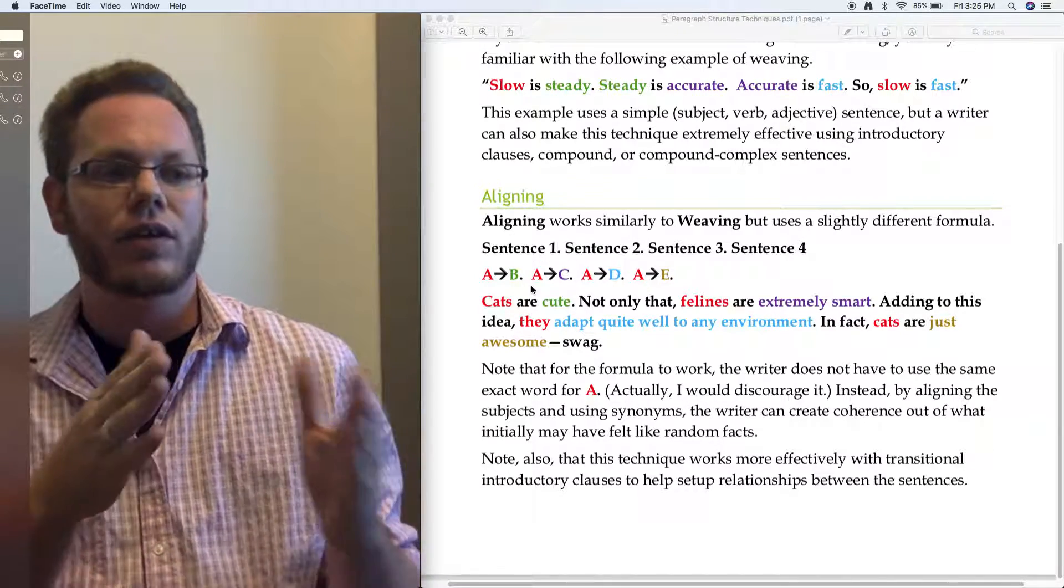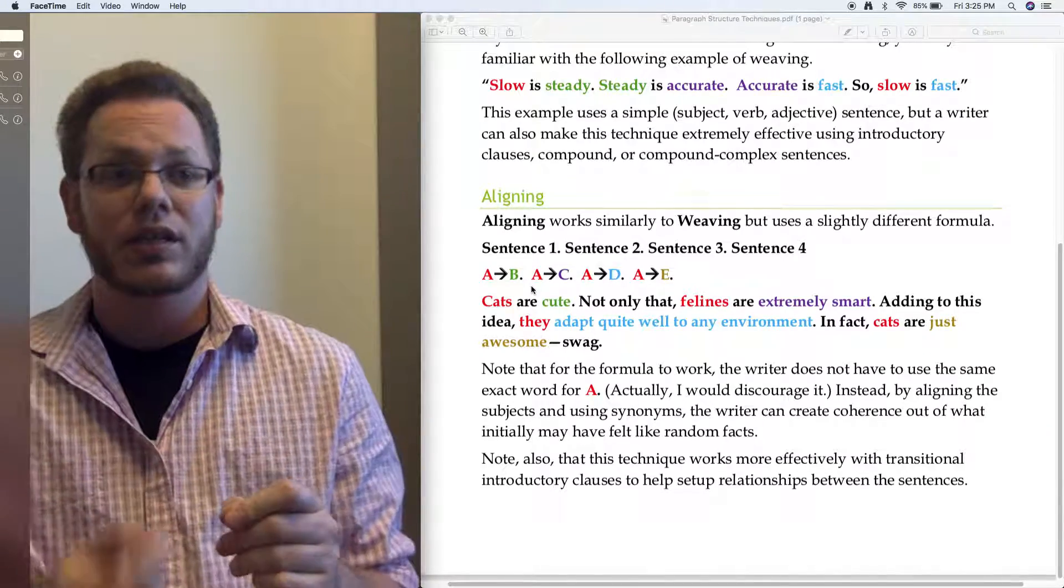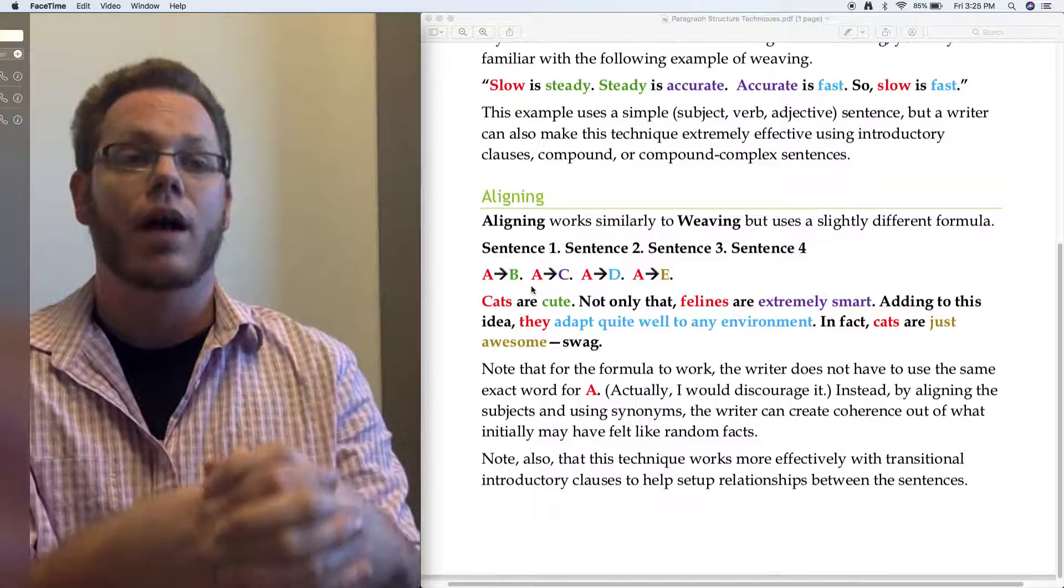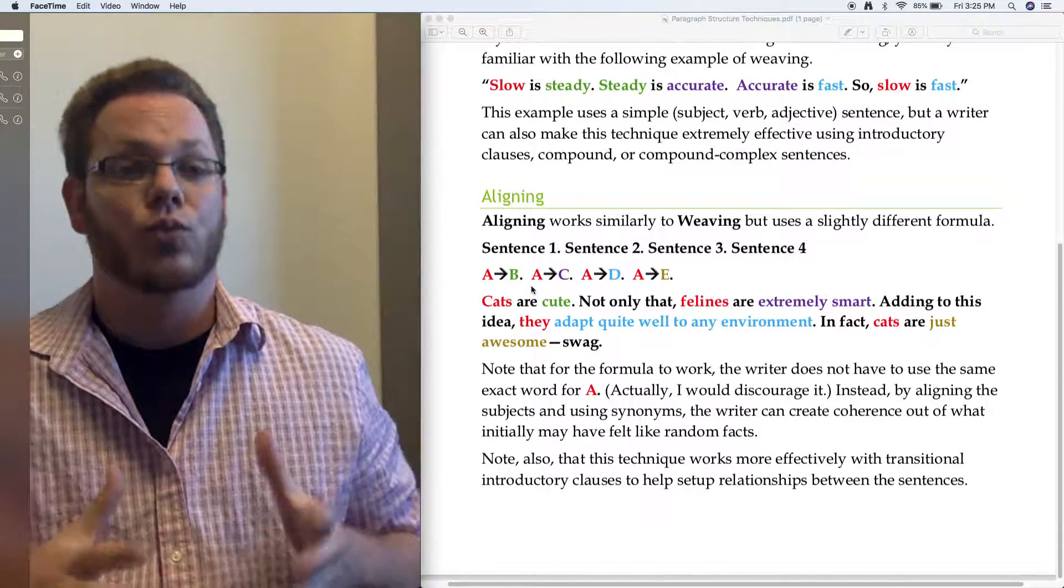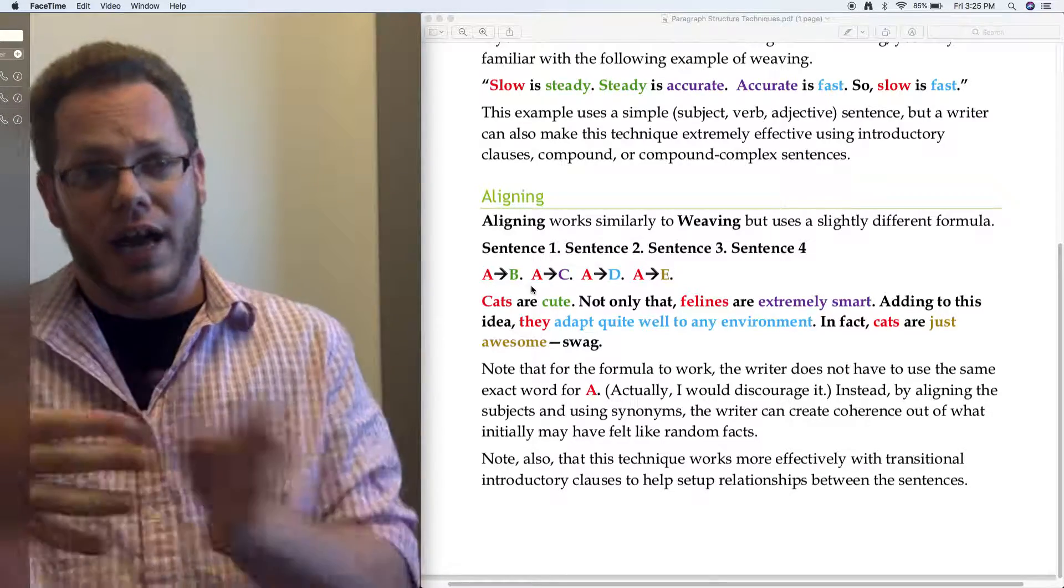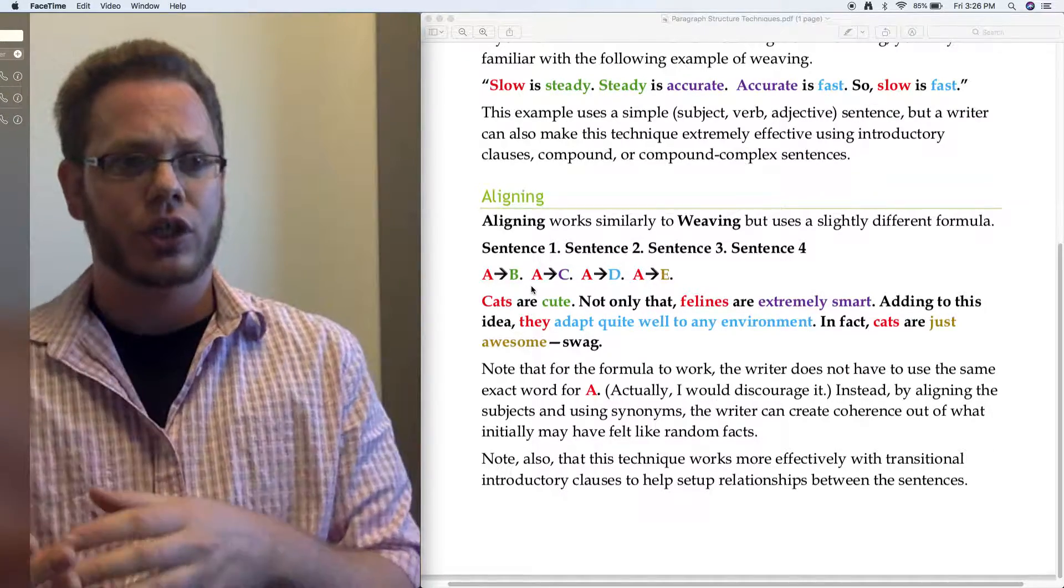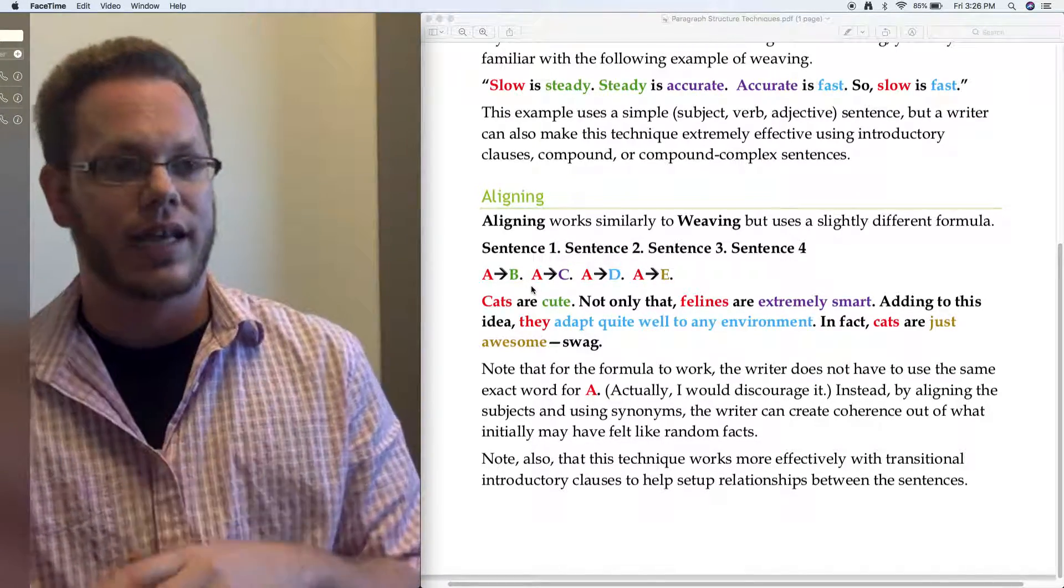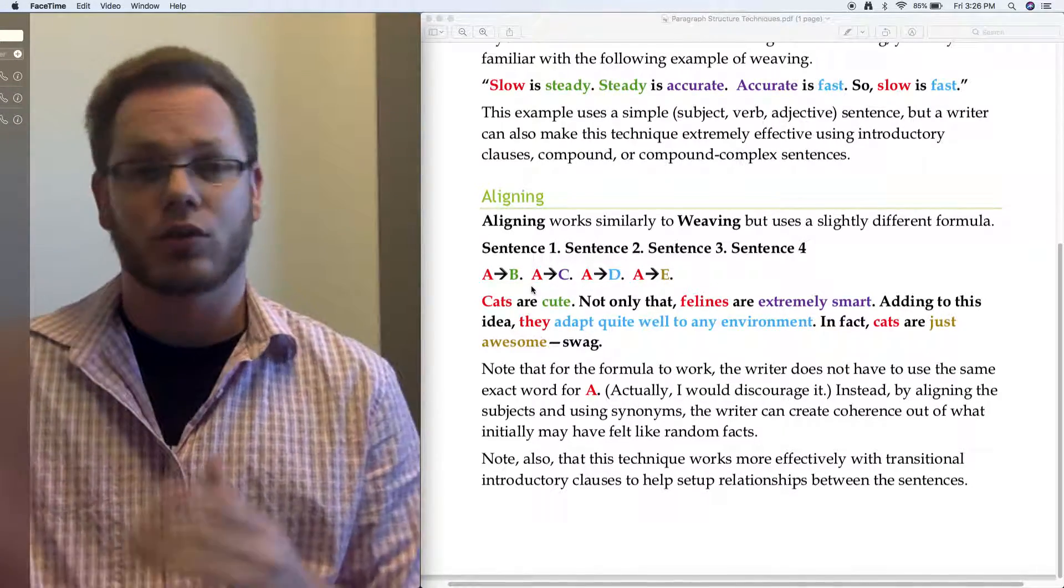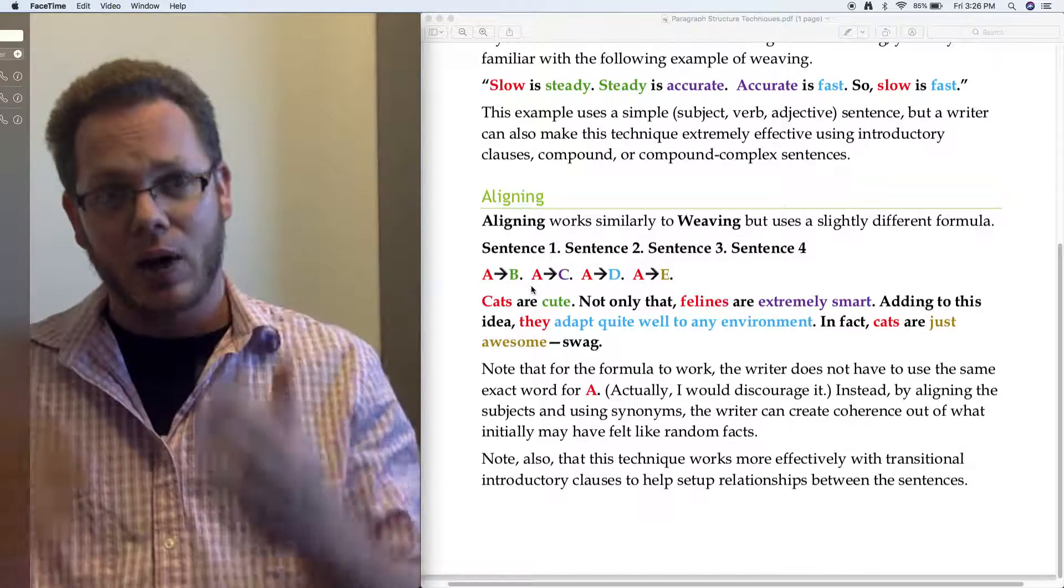The idea is that even if we're using synonyms here, cats, felines, they, cats, the main subject or topic of those sentences is what comes first. And then each sentence adds a little texture, adds a new lens. They're cute. They're smart. They adapt and they're just awesome. So each sentence adds a little more texture, whatever our topic is, that's how aligning works.